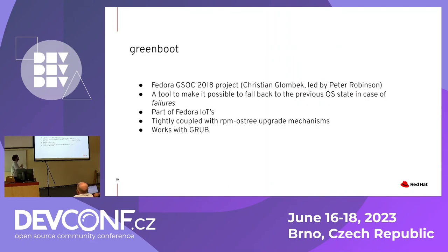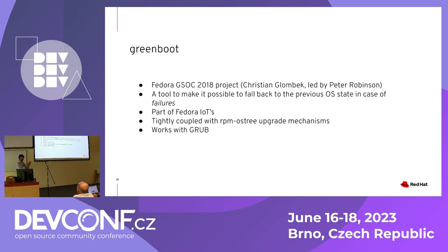That's when Greenboot came into the picture. Greenboot is a tool that makes it possible in an RPM-OSTree system to go back to the previous deployment if there are any issues in the upgraded deployment. Assuming some familiarity with RPM-OSTree: you have two deployments at all times, and when you upgrade, after you reboot, you go into the new one. With Greenboot, if you add some health checks and the new deployment doesn't work or doesn't behave as expected, it goes back to the working deployment — giving you a chance to revert any upgrade that goes wrong.